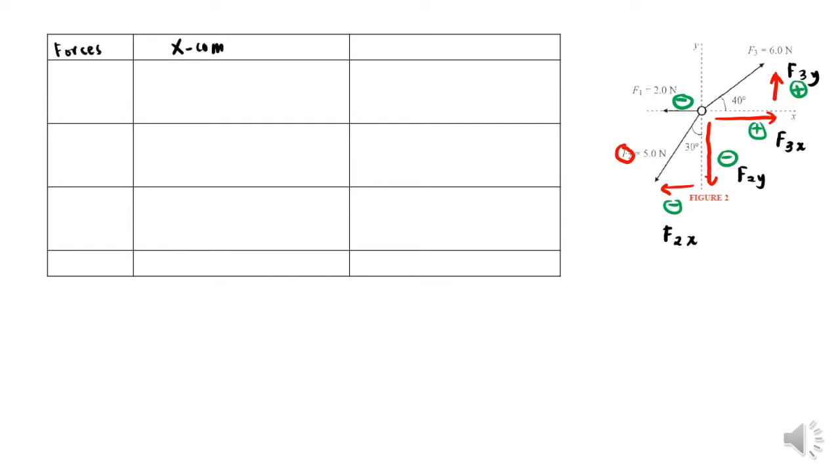Then substitute all the information into the table of forces. Since we have three forces, we have F1 with x component -2.0 N and y component 0 N. For F2, it is -5 sin 30° for x component and -5 cos 30° for y component.